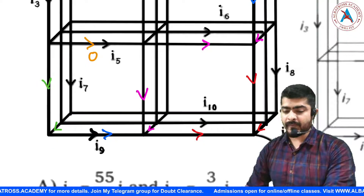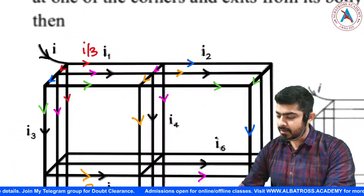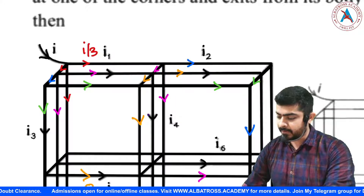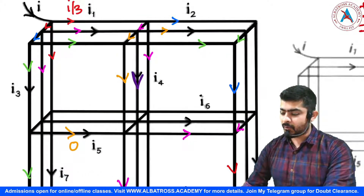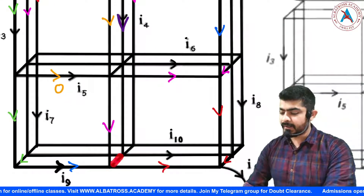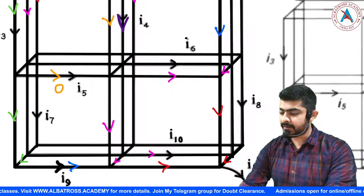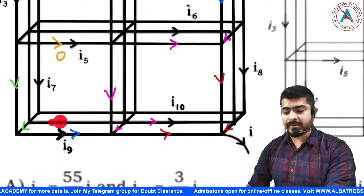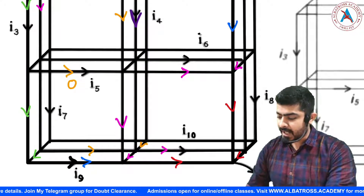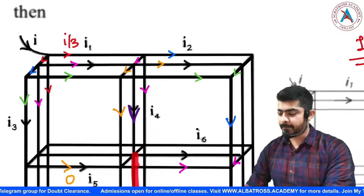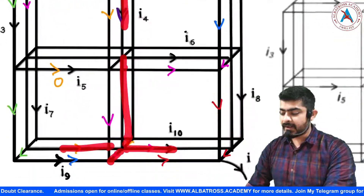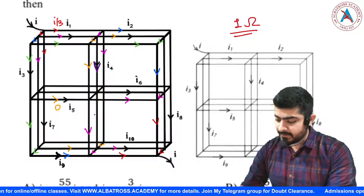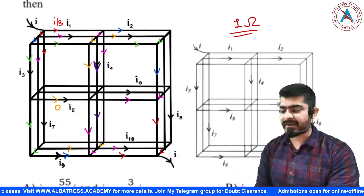We need one more branch current. With two pinks and two oranges accounted for, one current goes downward — I'll call this the dark pink current (D). By symmetry, this D current also appears on the corresponding symmetric branch. The circuit analysis is now almost complete.